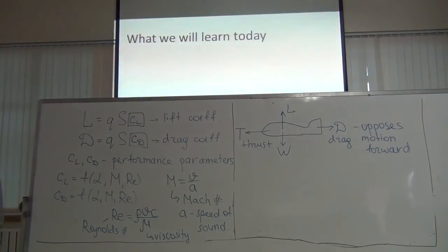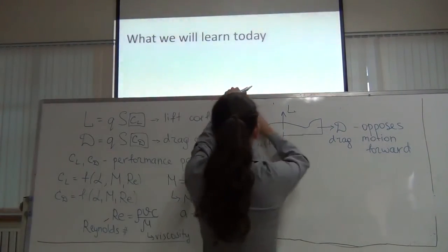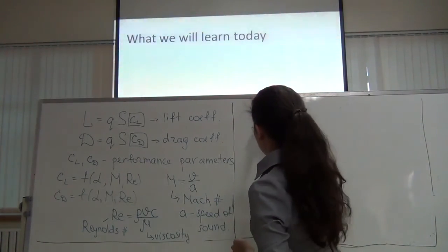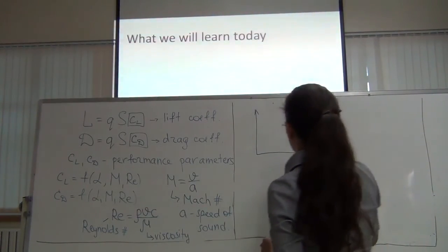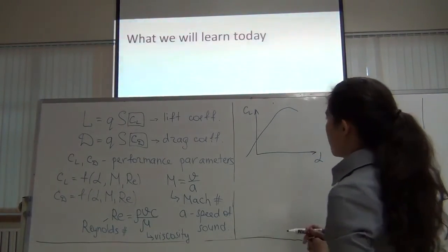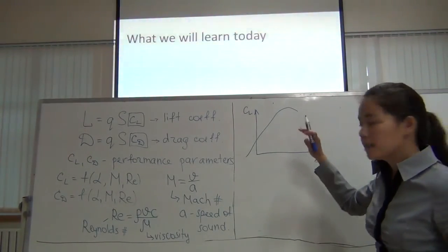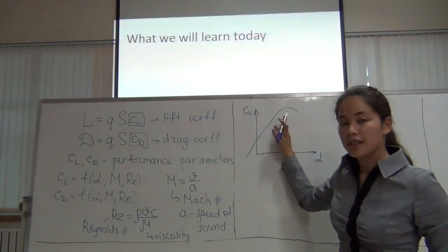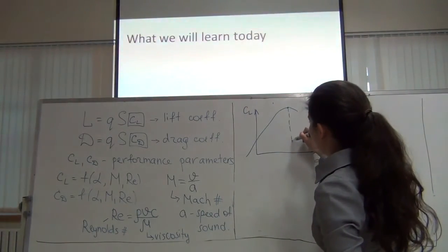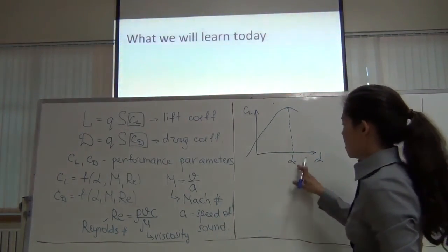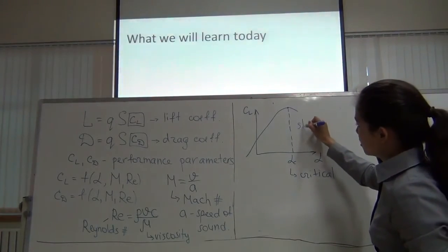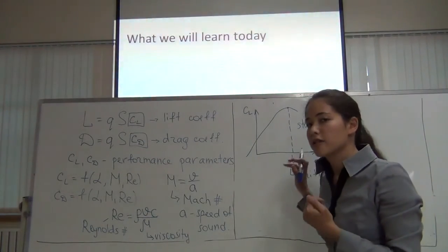Let's see how the lift coefficient depends on angle of attack. As we increase the angle of attack, the lift coefficient increases, meaning the airfoil produces more lift. But at some point it stops increasing — this is the critical angle of attack, alpha-c. After that, stalling occurs and there is less and less lift as the angle of attack continues to increase.